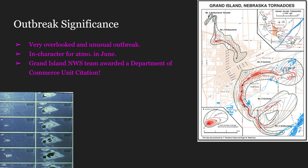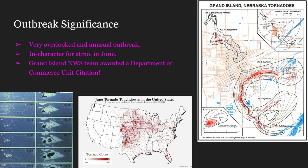These last two tornadoes each caused $2.5 million in damage. This is a very overlooked and the most unusual outbreak I have ever seen. However, when we look at the grand scheme of June climatology, this is in character for the atmosphere. Dixie Alley, Carolina Alley, and Hoosier Alley see it — June tornado touchdowns are much further north, because high pressures typically sit around the deep south, forcing lows further north than normal. The opposite is true for November or December.